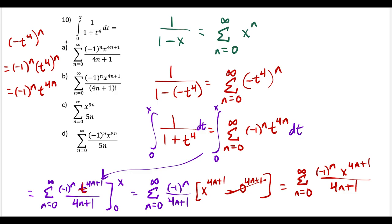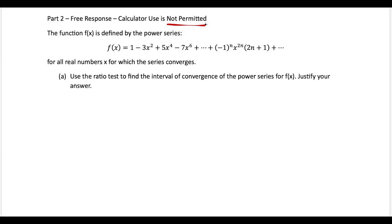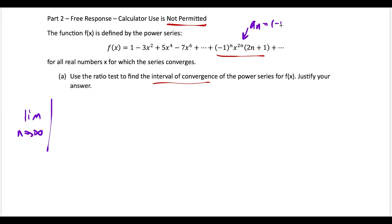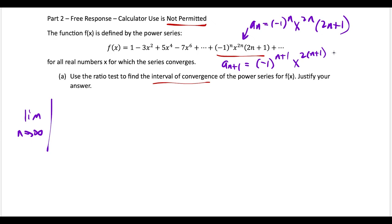For part two, we have a free response question — no calculator permitted. We have a power series f(x) with first four terms and a general term. We need to use the ratio test to find the interval of convergence. The general term a_n is (−1)^n · x^(2n) · (2n+1). For the ratio test, we take the limit as n→∞ of |a_(n+1)/a_n|.